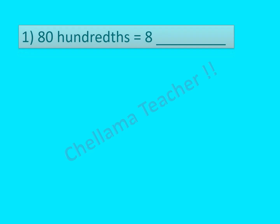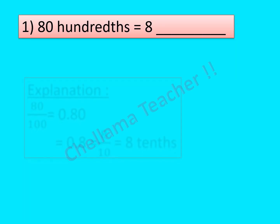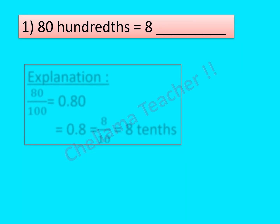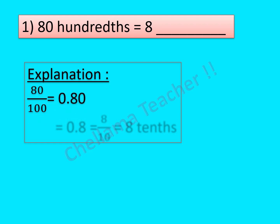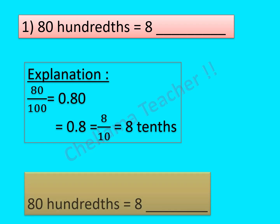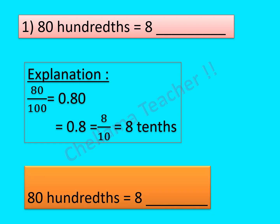Question No. 1: 80 hundredths is equal to 8 dash. Here, 80 hundredths is equal to 0.80, which can be written as 0.8, which is equal to 8 by 10 — that means 8 tenths. So the answer is: 80 hundredths is equal to 8 tenths.